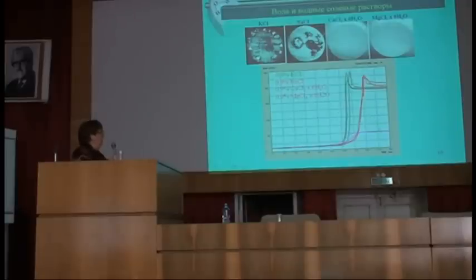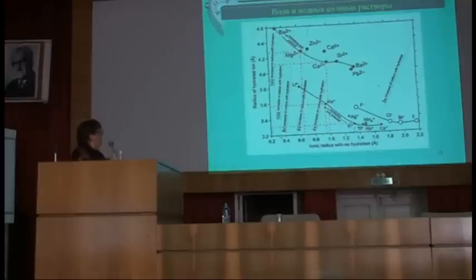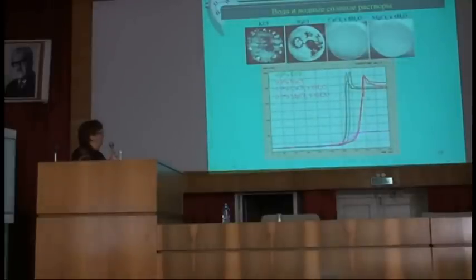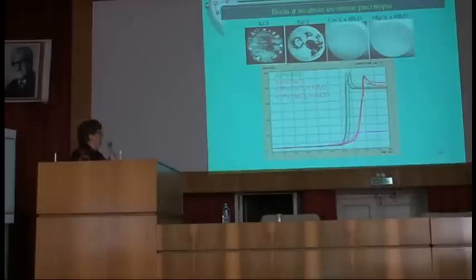С чем связана разная скорость кристаллизации? Известно, что размер катионов в данном ряду солей изменяется: самый большой размер у калия, дальше натрий, кальций и магний. В гидратированном виде, поскольку плотность поверхностных зарядов меняется в зависимости от радиуса, самая малая гидратная оболочка у калия, затем натрий, кальций и магний. Более быстрая кристаллизация калия и более медленная у натрия могут быть связаны именно с размером гидратных оболочек.